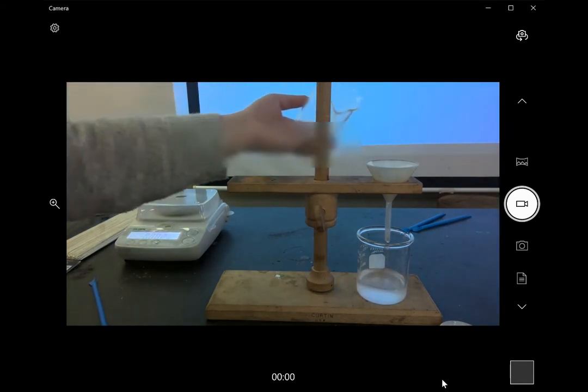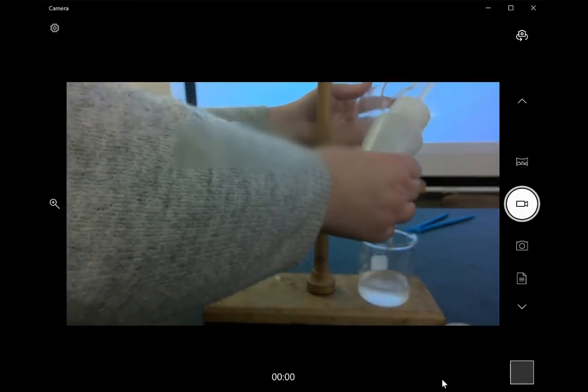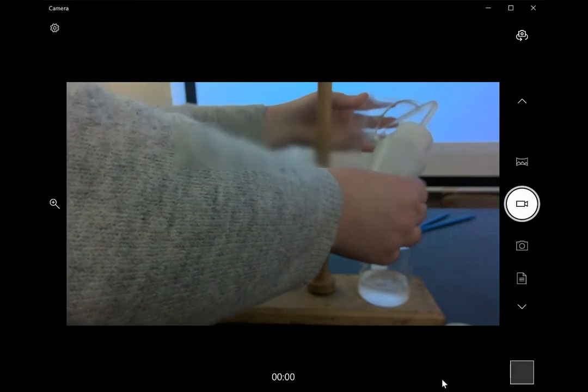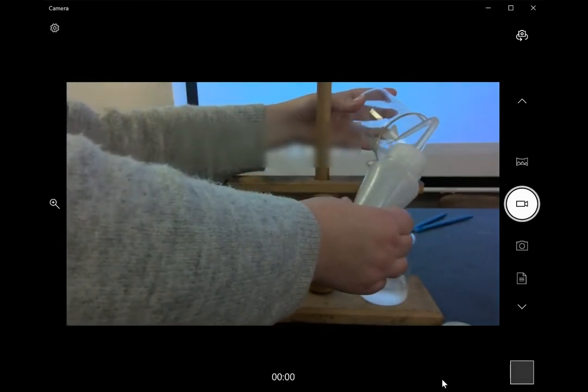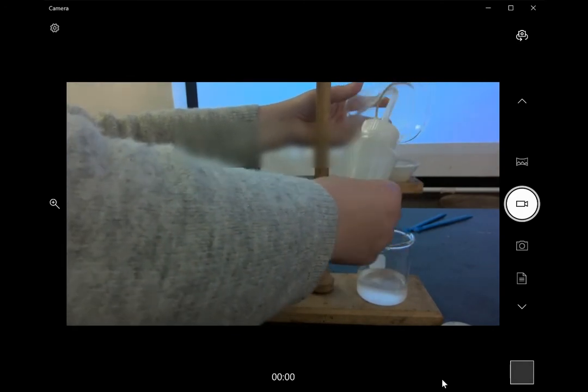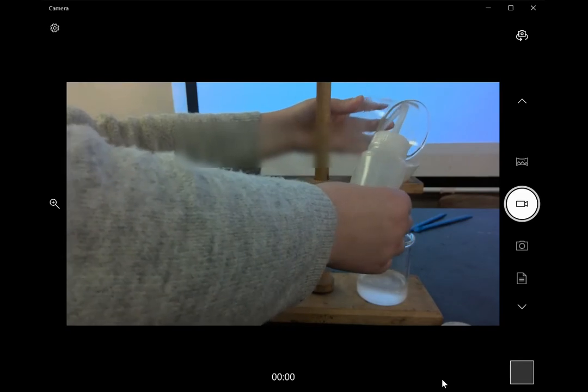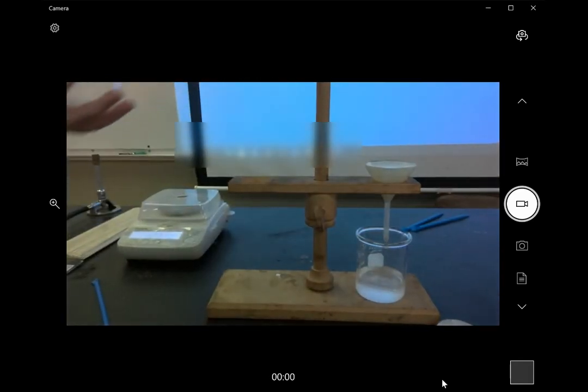So once we've emptied our beaker, we want to make sure to wash it out. We can see that there's still some product left in it, so we're going to use distilled water and rinse it out so that all that product that we produce, or at least as much as possible, ends up in our filter paper. Any that remains on the sides of our beaker, we want to make sure we put in our funnel.